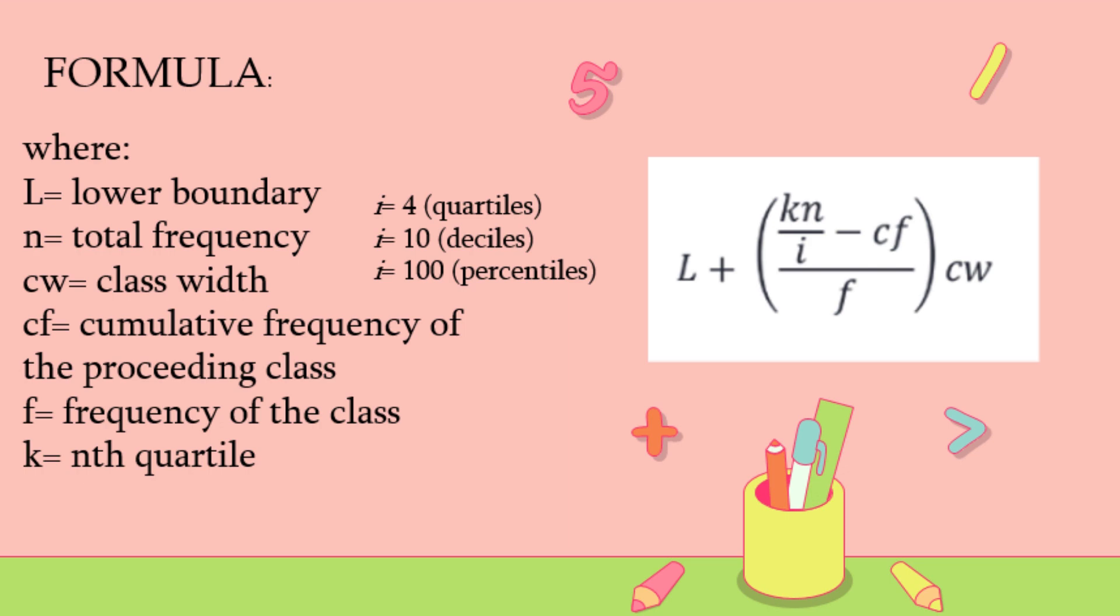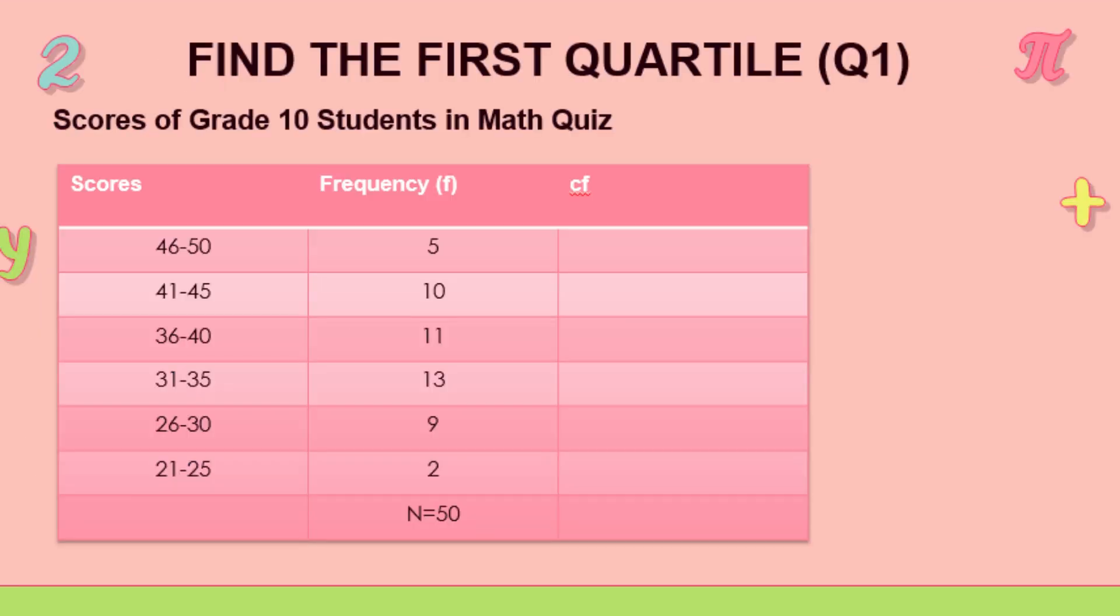For our first example, we have to find the first quartile. So, the scores of grade 10 students in math quiz. Their scores are from 21 to 25, the frequency is 2.